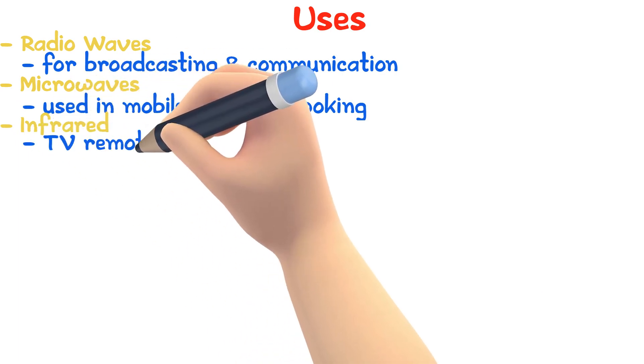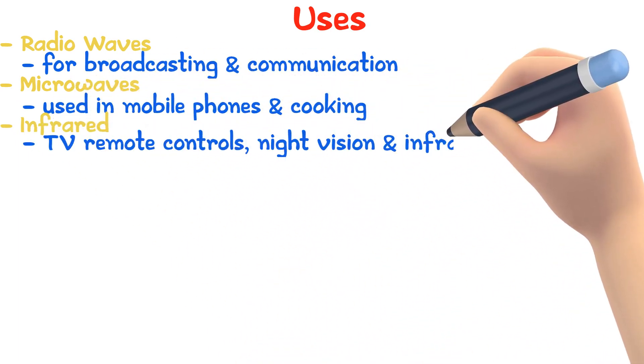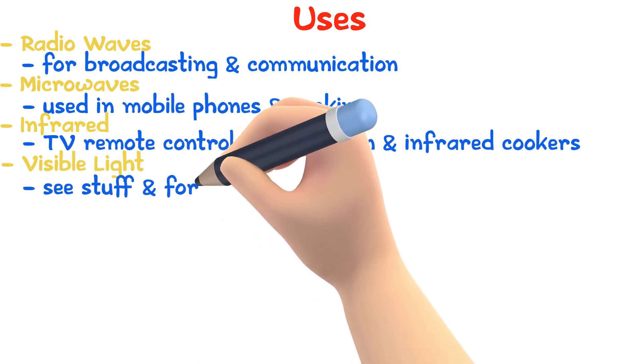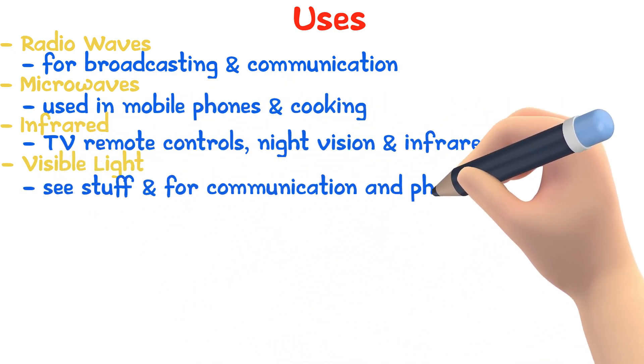Infrared is used in some TV remote controls, night vision, and infrared cookers. Visible light is what allows us to see and is also used in communication and photography.